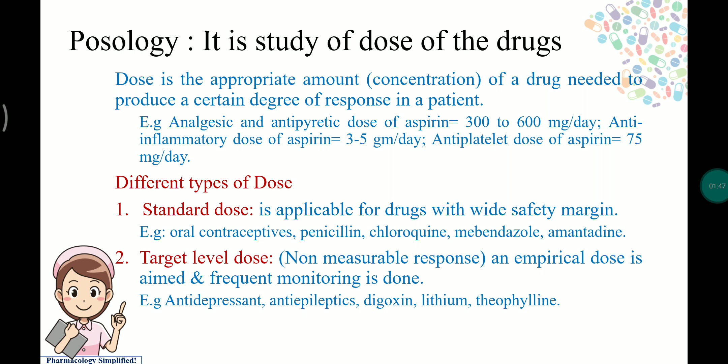Standard dose is applicable for drugs with a wide safety margin; they have a specific dose beyond which the drug will be unsafe. Examples include oral contraceptives, penicillins, chloroquine, mebendazole, and amantadine. Target level dose involves a non-measurable response — we give a certain amount and frequently monitor the patient.